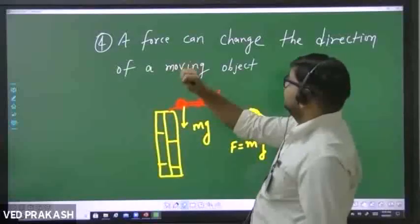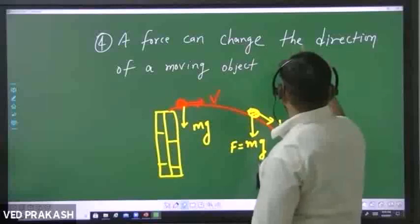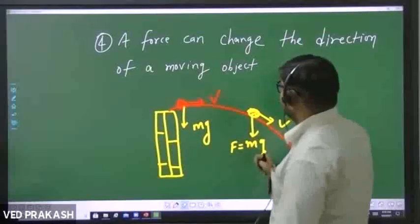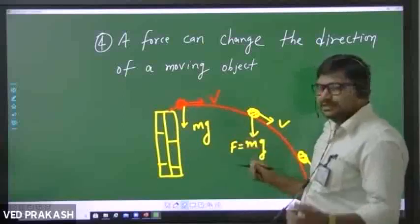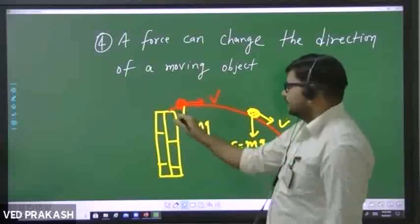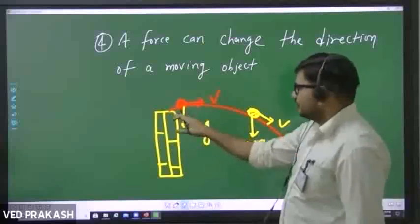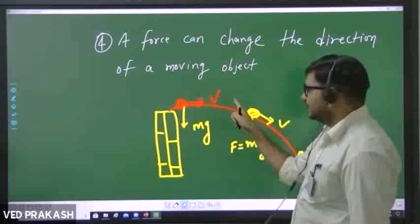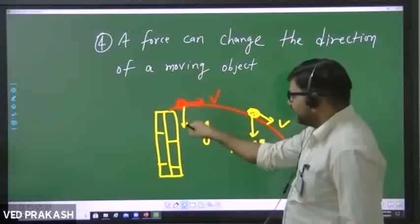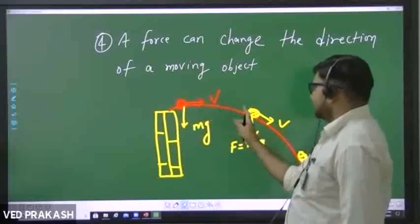The fourth effect of force is a force can change the direction of a moving object. Suppose this object is moving in a particular direction, here in horizontal direction. If you throw a ball from the top of a tower, then this ball initially will start moving in horizontal direction. But because of force of gravity, it will start changing its direction.